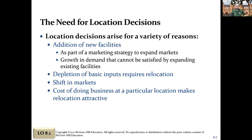Or maybe you're expanding globally and need to be closer to another location. There might be natural resources if you're upstream in the supply chain — think of an old gold mine or an oil well that dries up; you've got to move. So depletion of basic inputs. Shifting markets, or just the cost of doing business is cheaper. Maybe you're a movie production studio and Tennessee is giving tax breaks to come film there, so you go for the cost savings.